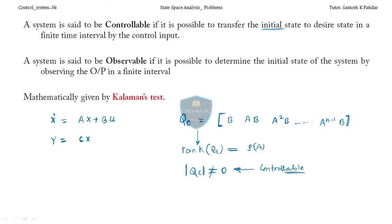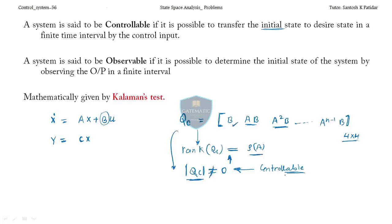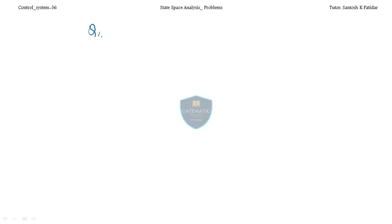So first form the Qc matrix starting with B, then AB, then A²B, continuing up to A^(n-1)B, where n is the order of the system. For a 4×4 system you go up to A³. After forming this matrix, find the determinant — if it's not equal to zero, rank of Qc equals rank of A, and the system is controllable.